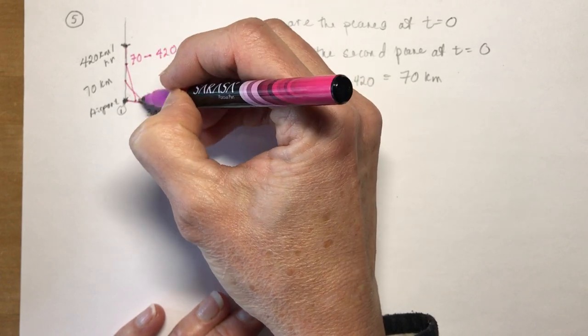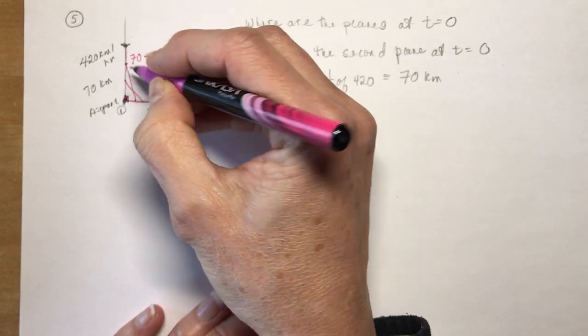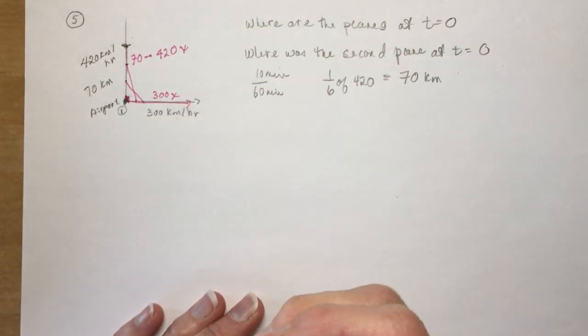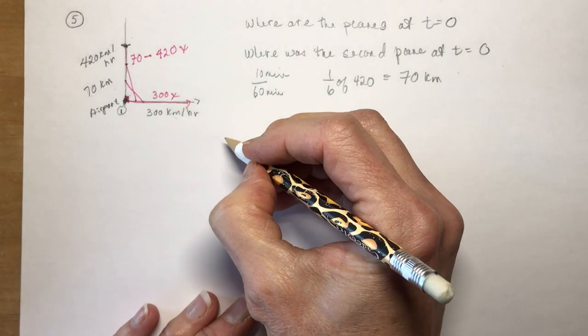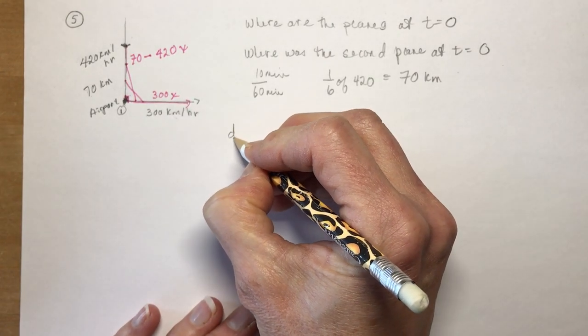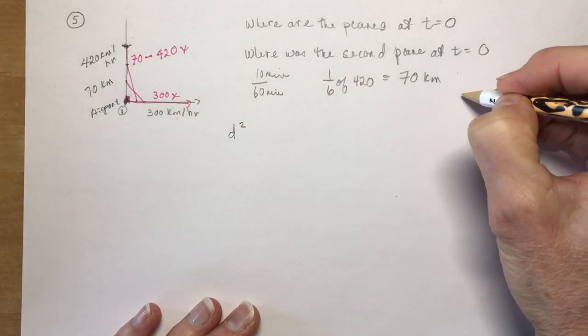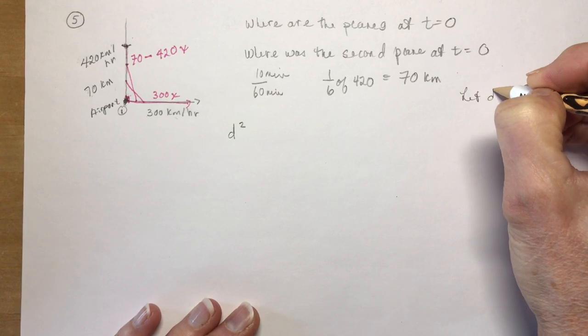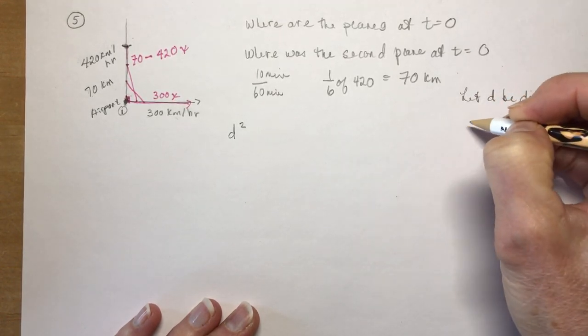Okay so we're trying to minimize this length. And as you can see that length is actually the hypotenuse of a right angle triangle. So I can make up an equation. I can say d squared. You should have some let statements in here. You know something like let d be distance between the two planes.